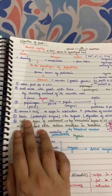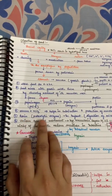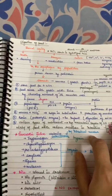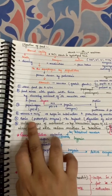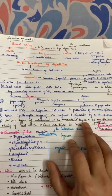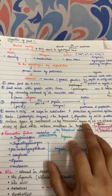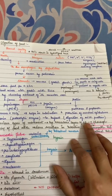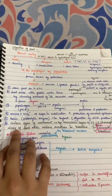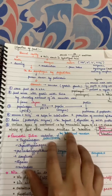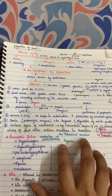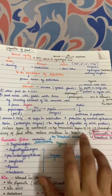Rennin is a proteolytic enzyme present in infancy for the digestion of milk protein. The muscular layer of the small intestine produces various types of movements which ensure thorough mixing of food with various secretions in the intestine.